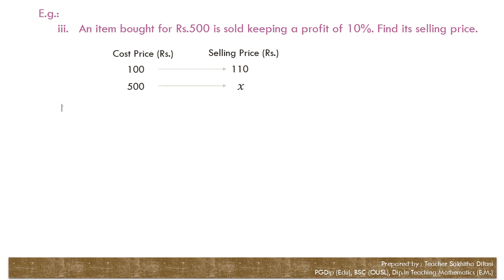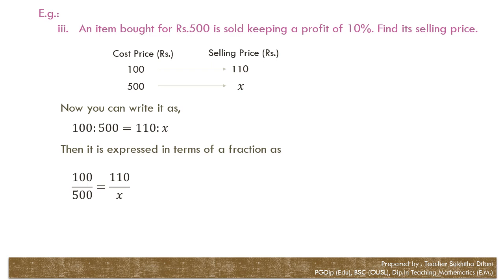So you can write the ratios of these quantities: the ratio between the cost prices and the ratio between the selling prices. They are equal. 100 to 500 equals 110 to X. Now express them as fractions: 100 over 500 equals 110 over X. By cross multiplication, 100X equals 110 into 500.